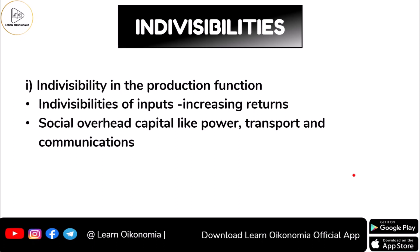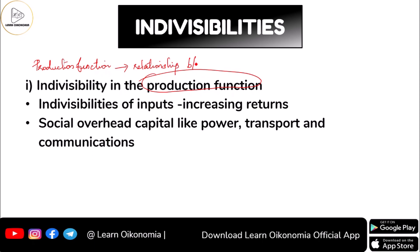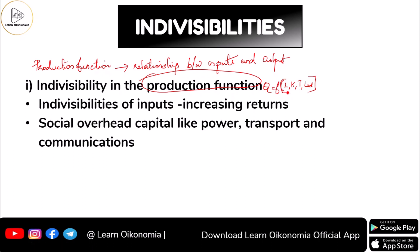The first indivisibility he talks about is the indivisibility in the production function. The production function shows the relationship between various inputs and output. You can say that Q, your output, is a function of various inputs such as labor, capital, technology, land, etc. Whenever there is a change in any of these inputs, it affects the output — this is what we consider the production function.